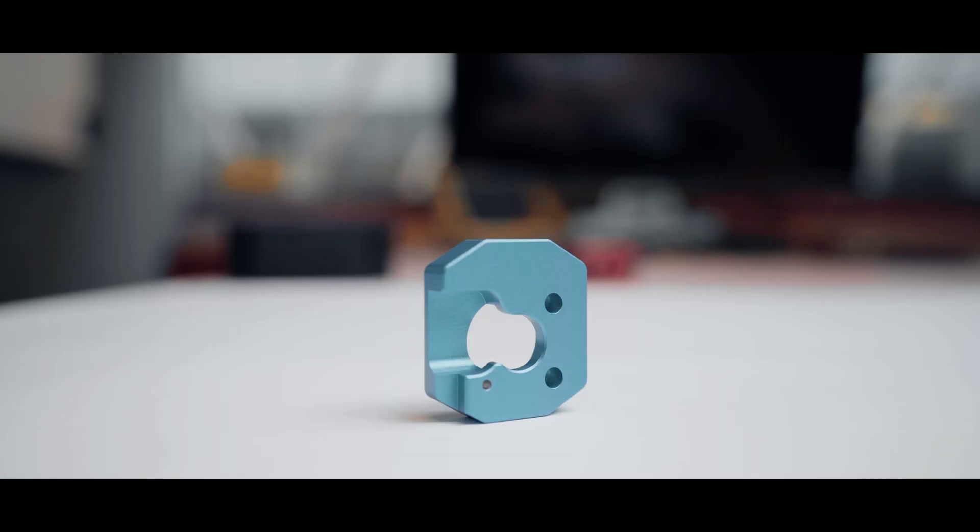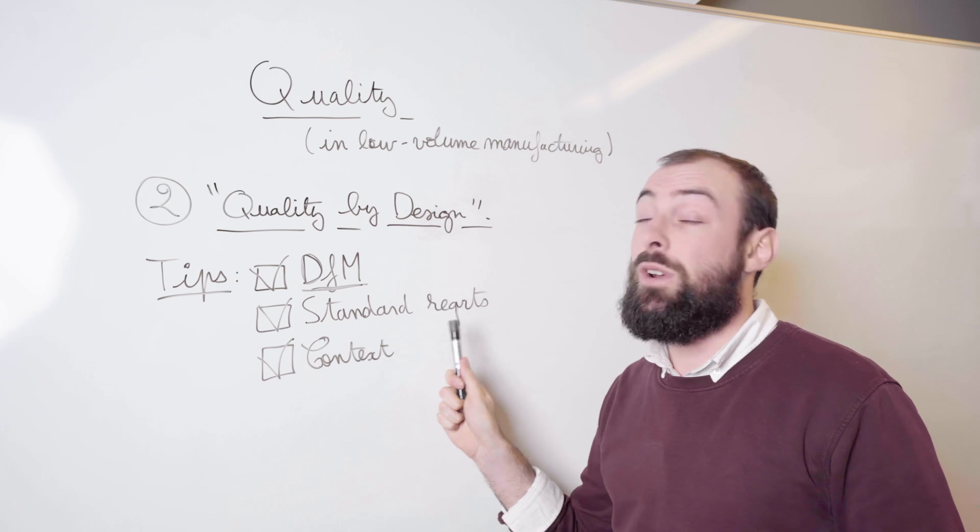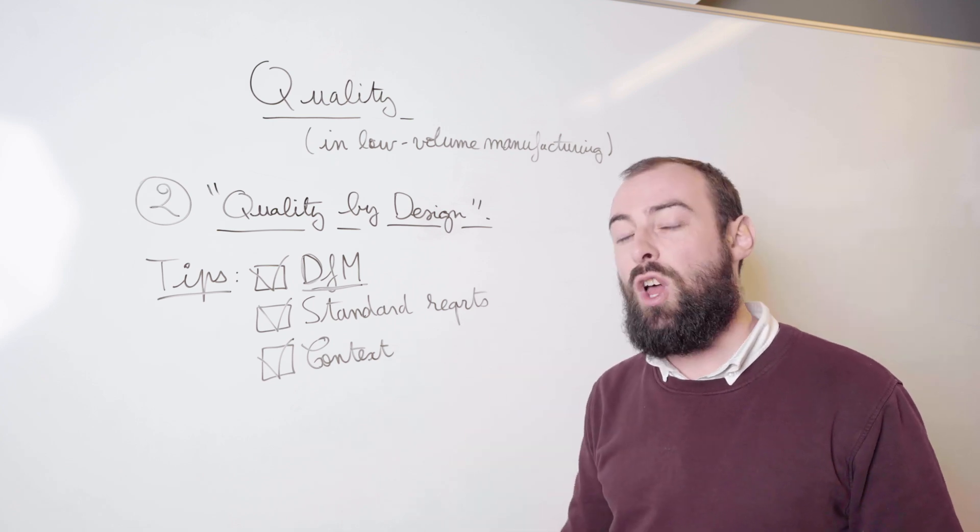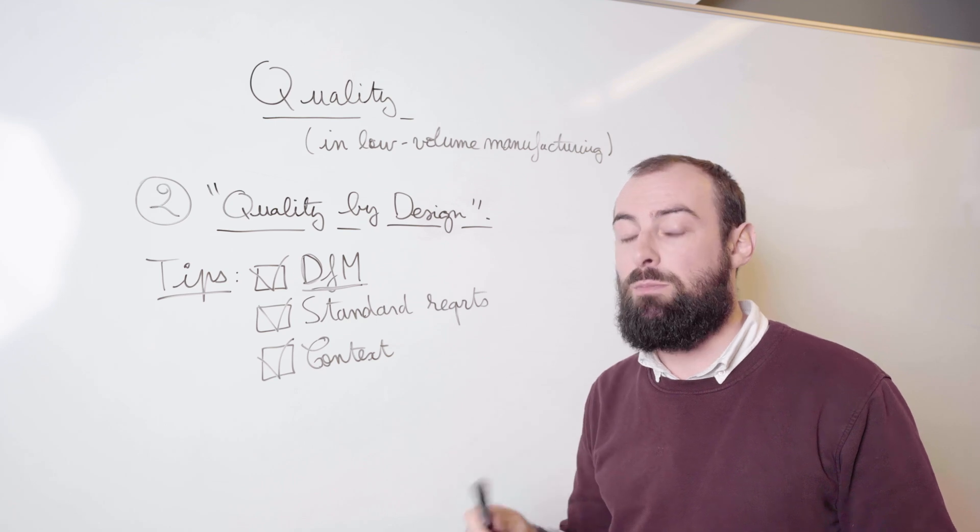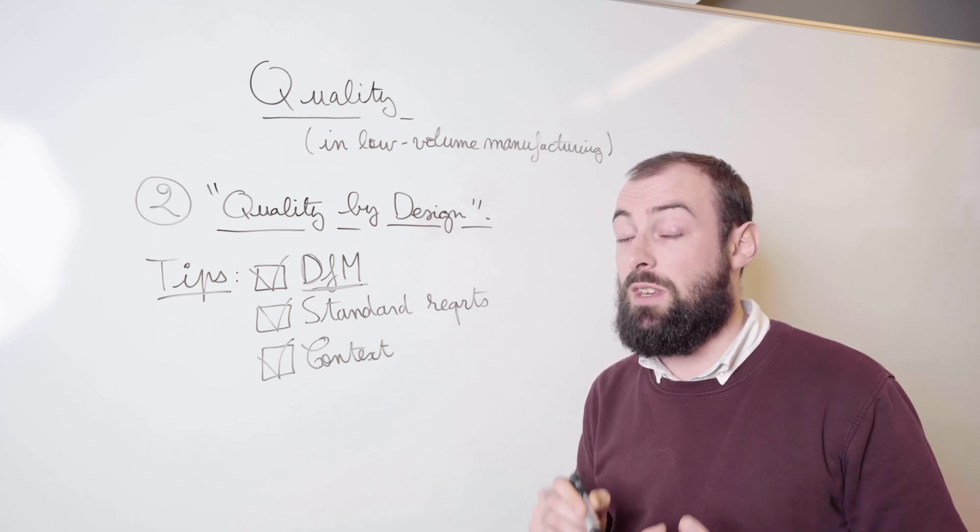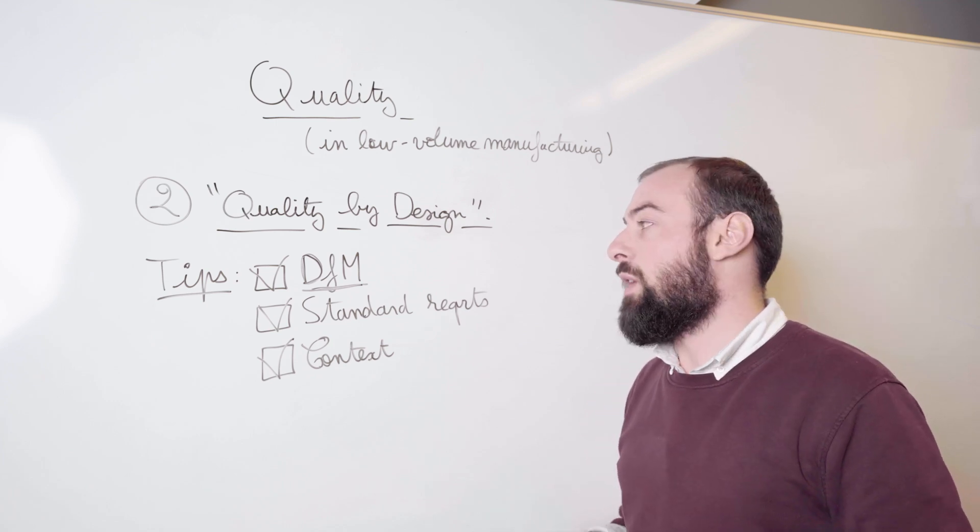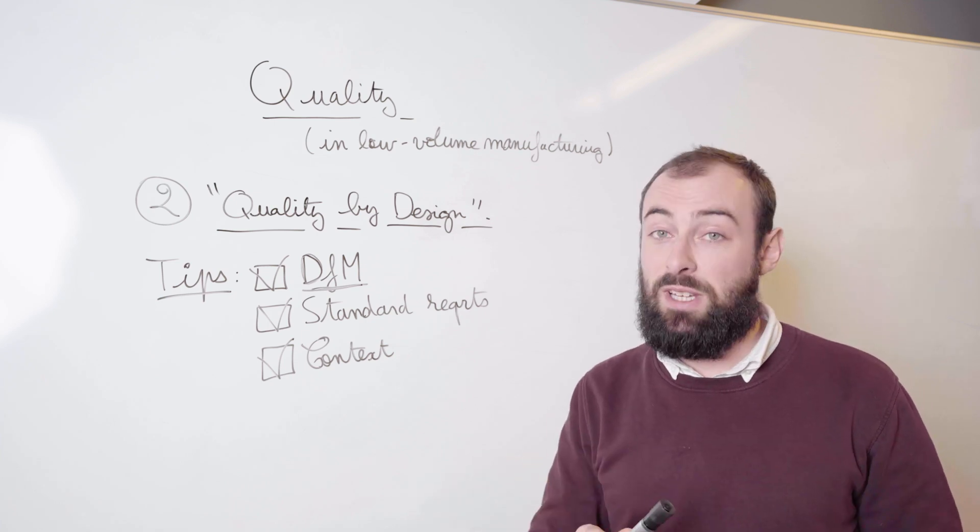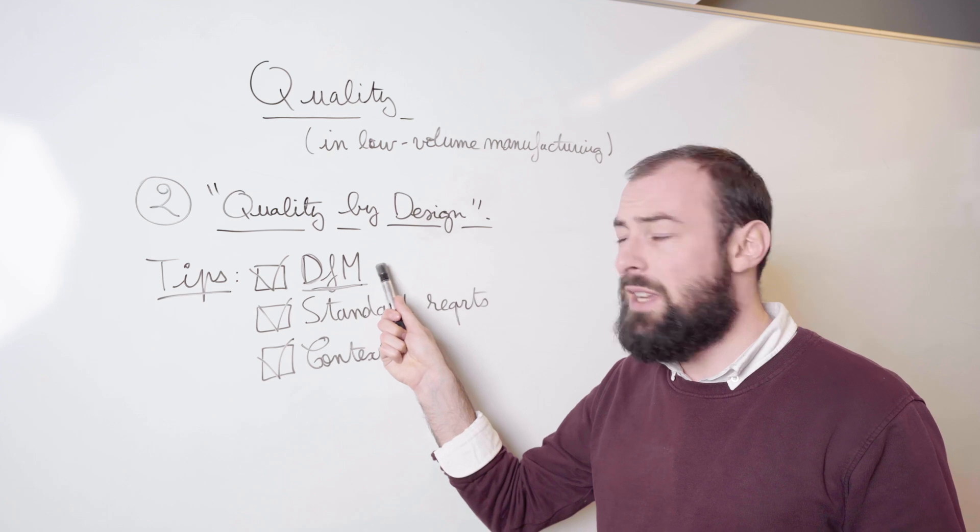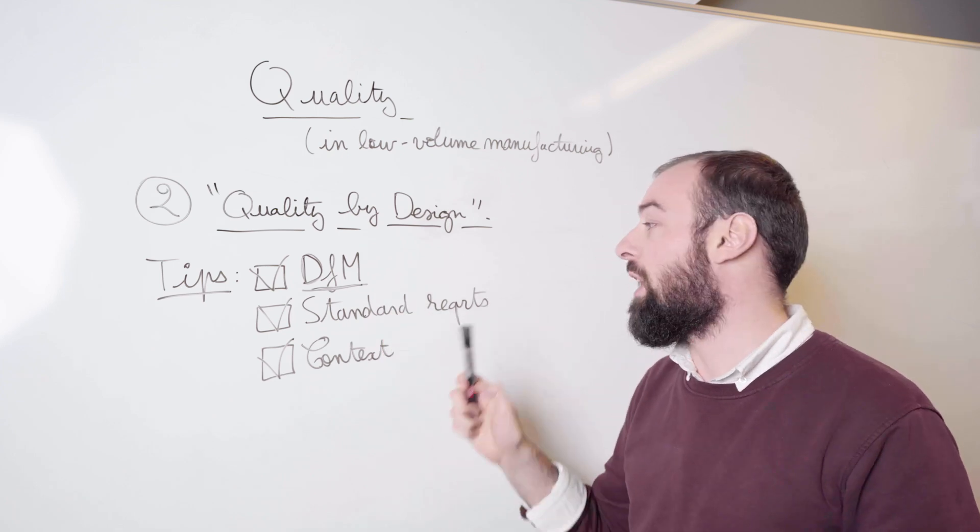The third important point is context. Context, meaning context of the part—what you will be using them for, what product they will be integrated in—is a very important piece of information for the manufacturer. Some designers may overlook this because they will think, oh, I'm very educated on DFM, I know all the aspects of CNC machining.